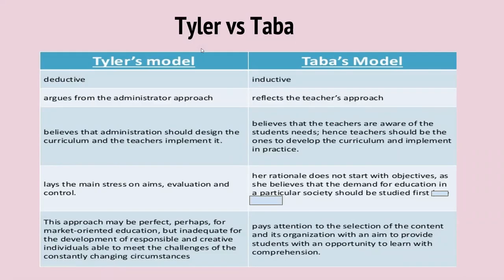Looking at Tyler versus Taba, some of the key differences are: in Tyler's model, it is deductive; in Taba's model, it is inductive. In Tyler's model, he argues from the view of an administrator approach, while Taba reflects a teacher approach. Tyler believed that administration should design the curriculum and the teacher should implement it. Taba, on the other hand, believed that teachers are aware of students' needs and therefore teachers should be the ones to develop the curriculum and implement it in practice.